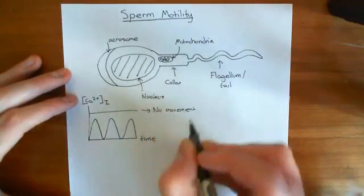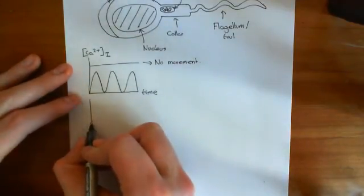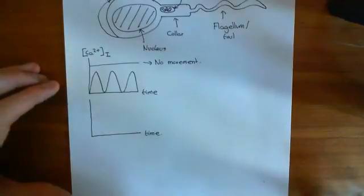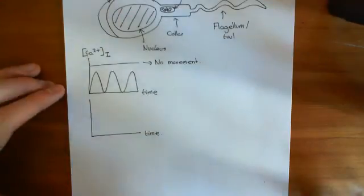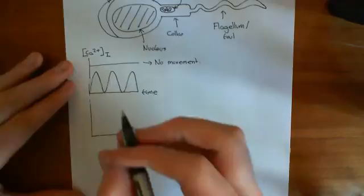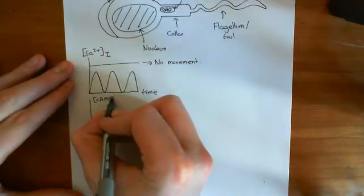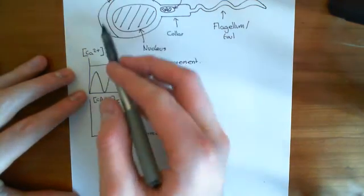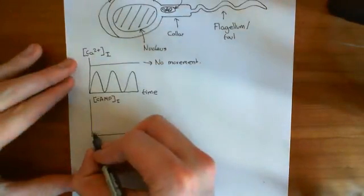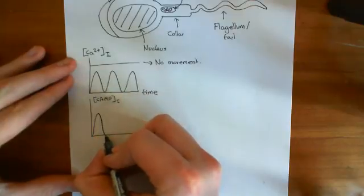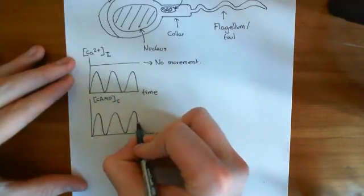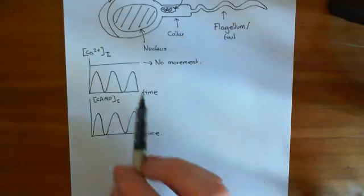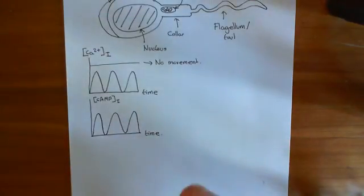We can further explore this by looking at how this is coupled to cyclic AMP going up and down. In spermatozoa, you have the adenylyl cyclase enzyme, adenylyl cyclase 8. Adenylyl cyclase 8, as we know, is activated by calcium. If we plot the cyclic AMP concentration intracellularly as a function of time, we would expect that when calcium goes up, it's going to activate adenylyl cyclase 8, which is in the sperm, making more cyclic AMP. So cyclic AMP would oscillate in phase with calcium - a phasic oscillation of cyclic AMP. And that is indeed what we see: cyclic AMP oscillates in phase with the oscillations in calcium.